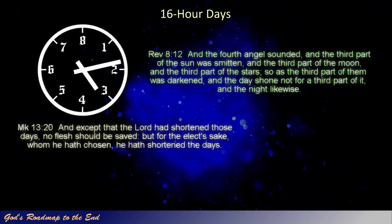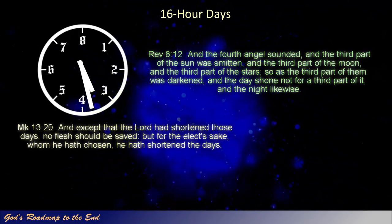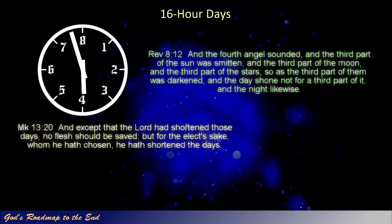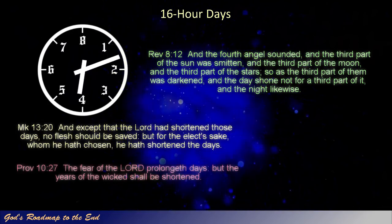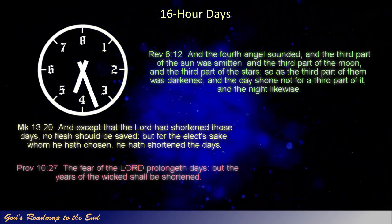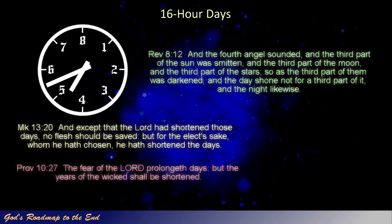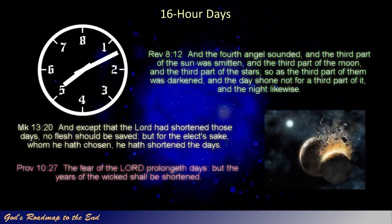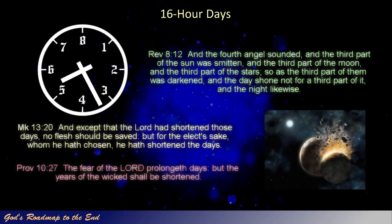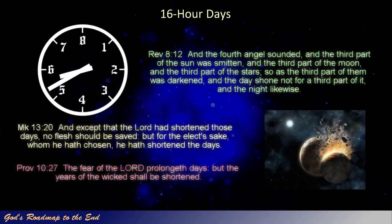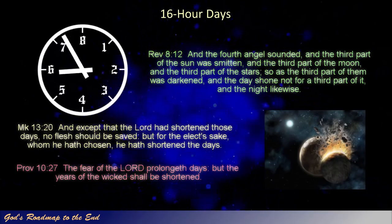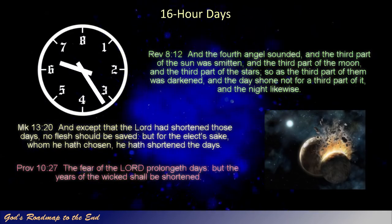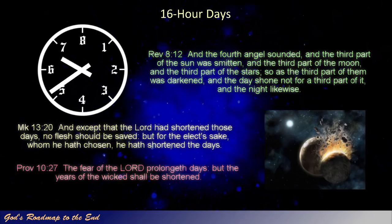Mark 13 verse 20: 'And except that the Lord had shortened those days, no flesh should be saved. But for the elect's sake, whom he hath chosen, he hath shortened the days.' Proverbs 10 verse 27: 'The fear of the Lord prolongeth days, but the years of the wicked shall be shortened.' It would seem that the bruising of the two seeds, represented by two planetary objects partially colliding, would be the single most probable initiating factor that would lead into the events described in Revelation, providing overwhelming support for the resulting destruction described in the book of Revelation, especially during the final half of the tribulation period.